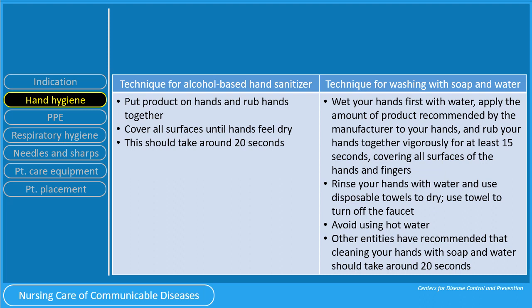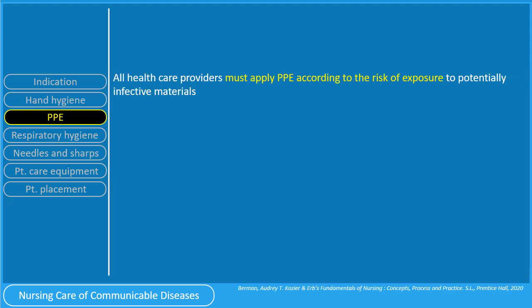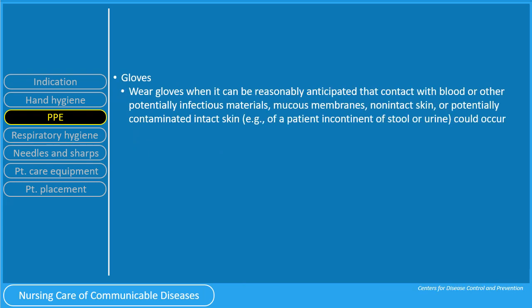Use towel to turn off the faucet. Avoid using hot water. All healthcare providers must apply PPE or personal protective equipment according to the risk of exposure to potentially infective materials. Personal protective equipment includes clean or sterile gloves, gowns, masks, and protective eyewear. Wear gloves when it can be reasonably anticipated that contact with blood or other potentially infectious materials, mucous membranes, non-intact skin, or potentially contaminated intact skin could occur.